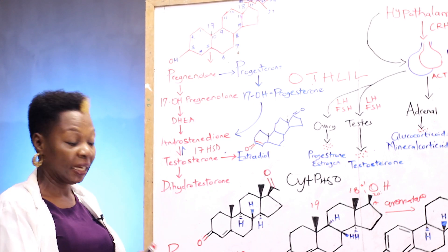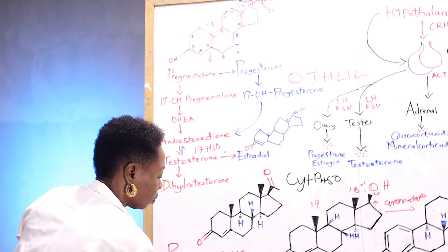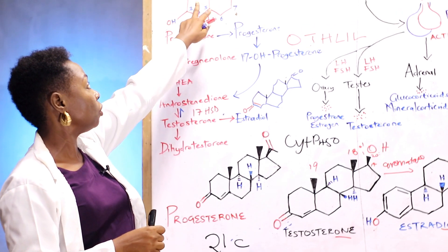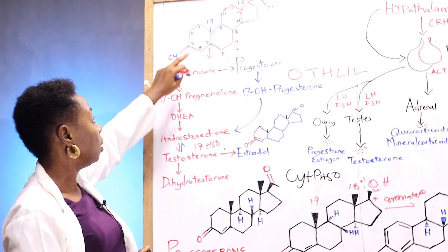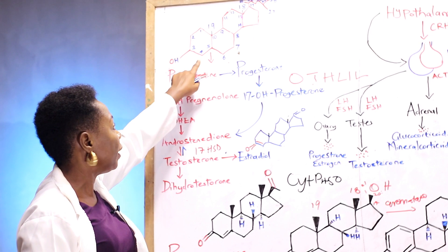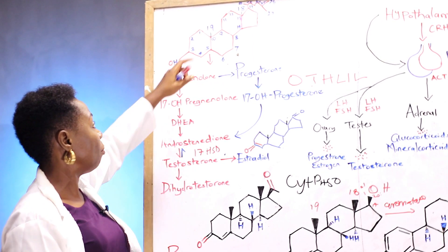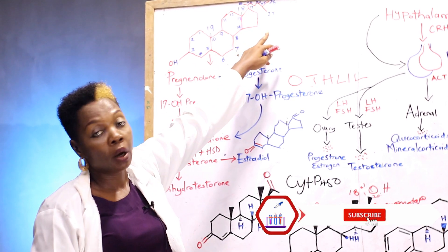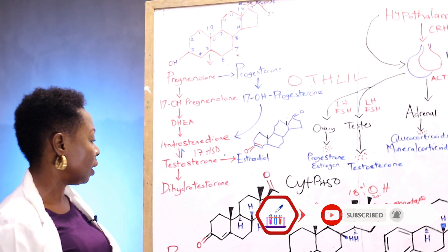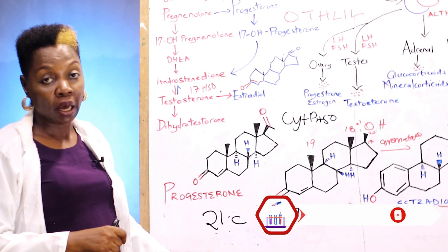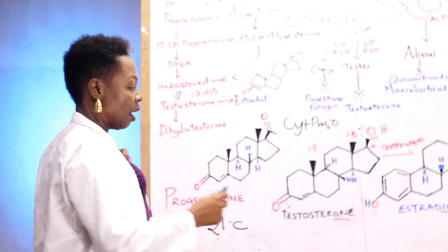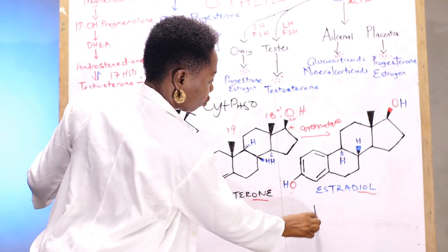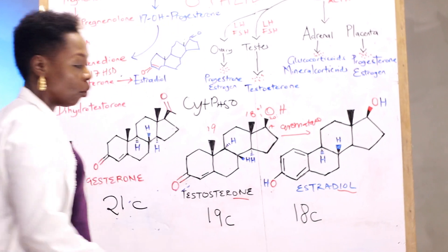Progesterone is the first hormone in the steroidogenic pathway and it has 21 carbon atoms. Looking at the numbering of the cholesterol compound, you can count the carbon atoms down to carbon 27. Progesterone is a 21-carbon atom compound, testosterone is a 19-carbon atom compound, and estradiol is an 18-carbon atom compound.